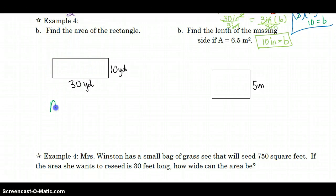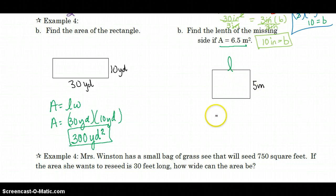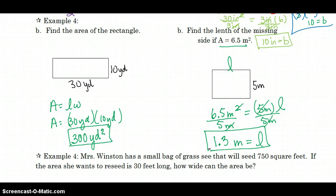Finding the area of a rectangle is easy. It's just length times width. So the area here is 30 yards times 10 yards, and 30 times 10 is 300, and it's yards times yards so that makes yards squared. Here they gave me the area and I'm supposed to find the missing length. So 6.5 meters squared equals 5 meters times L, divide by 5 meters, and I'm going to have meters in my answer. 5 goes into 6 once with 15 remaining, so it's 1.3 meters for my length.